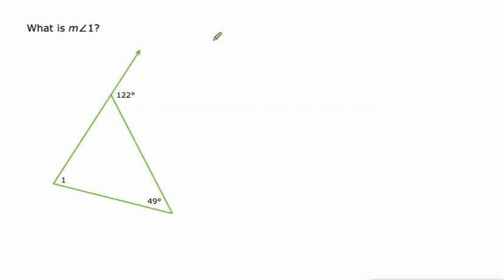This is a little bit different because now we've got 122 degrees is equal to the measure of angle 1 plus 49 degrees. So we need to subtract 49 from 122 to get the measure of angle 1, which is 73 degrees.